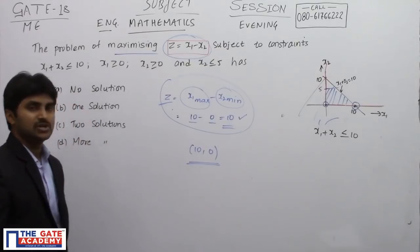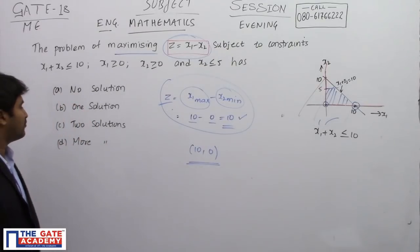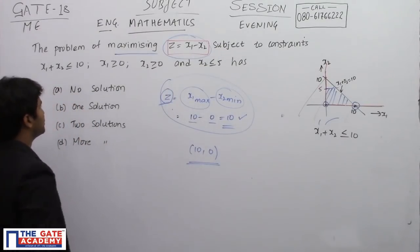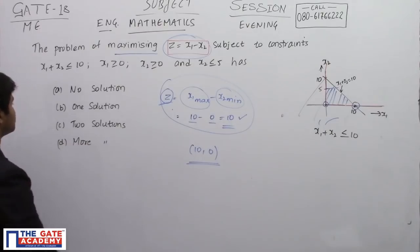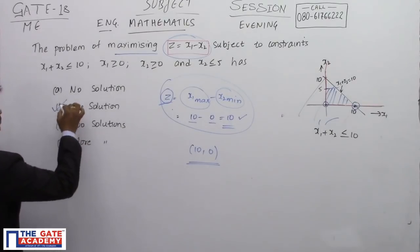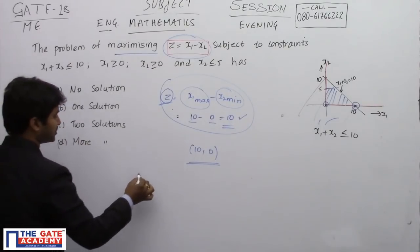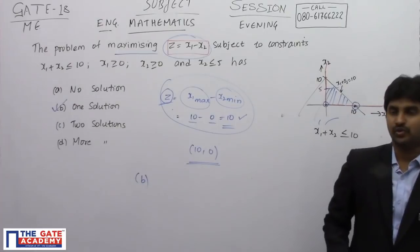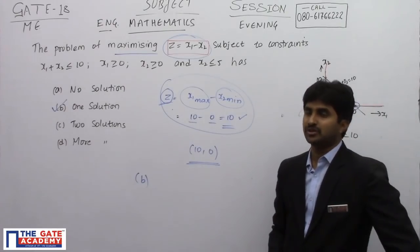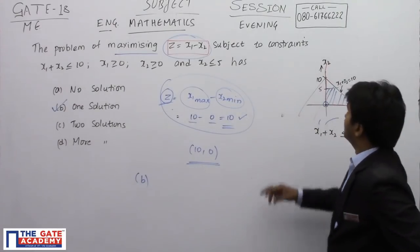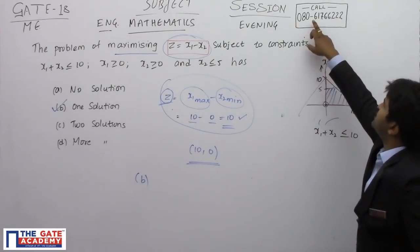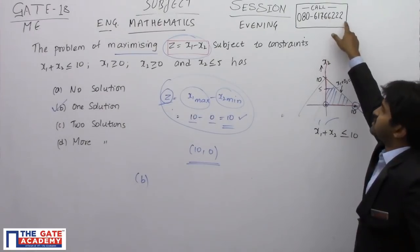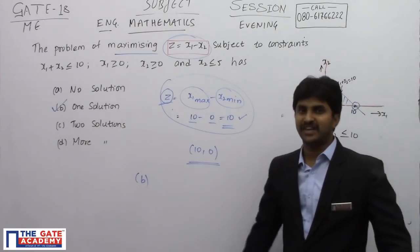So the answer for this question: the function z has a maximum value of 10, and there is only one solution, which is x1 equal to 10 and x2 equal to 0. Therefore, option B is the right answer. If you have any doubt regarding this question, you can call on the number 080-617-6622. Thank you.